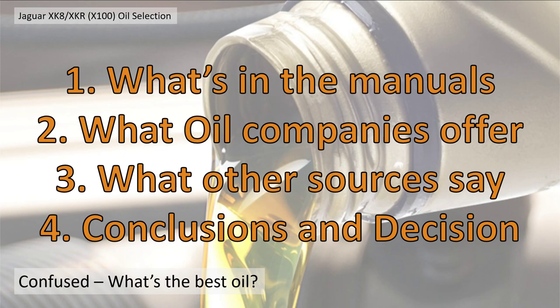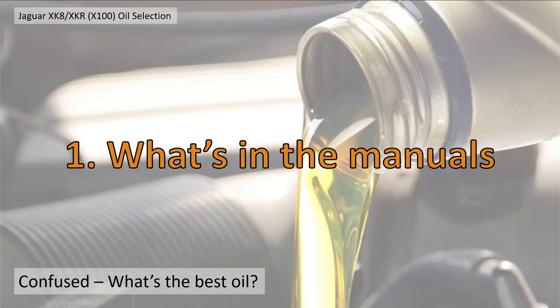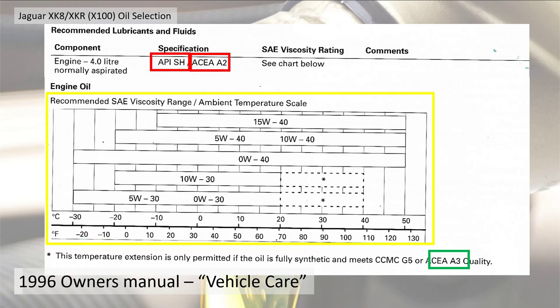So what is in all the manuals? The first thing I did was look in my 1996 owner's manual under vehicle care, and there it specifies API SH or ACEA A2 — great. So what's the viscosity? There's a big chart here and I'm not sure what it means, but I've got an idea. You've got the minus temperatures and you're at 0W30, 0W40 — that was the euro spec before. That's fine, but it doesn't actually tell you a single grade.